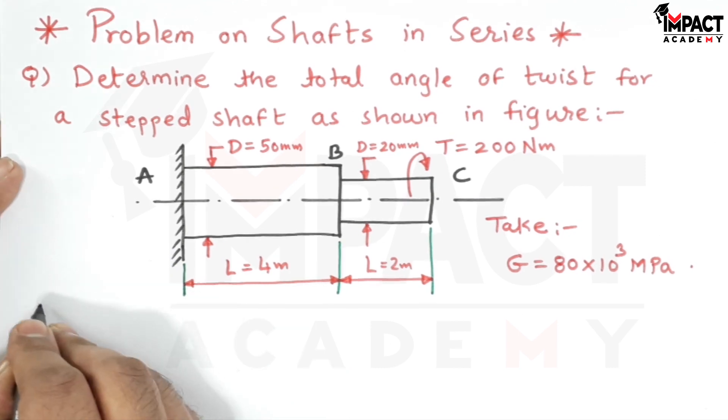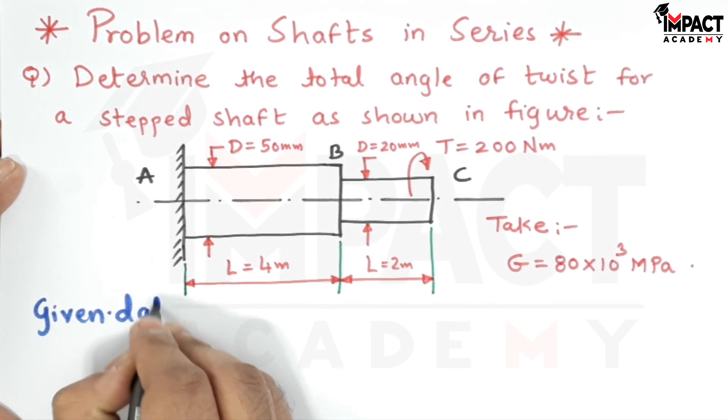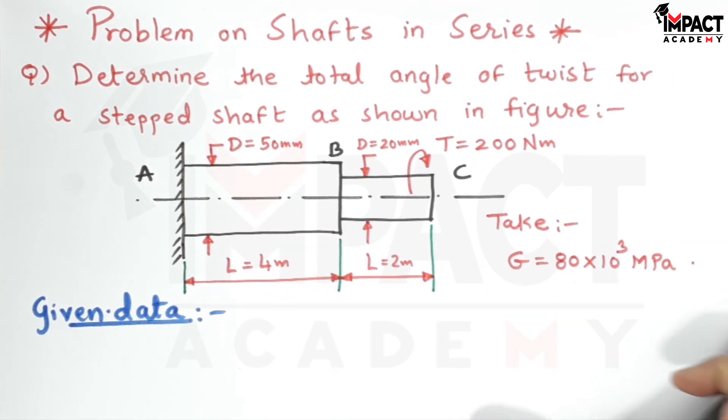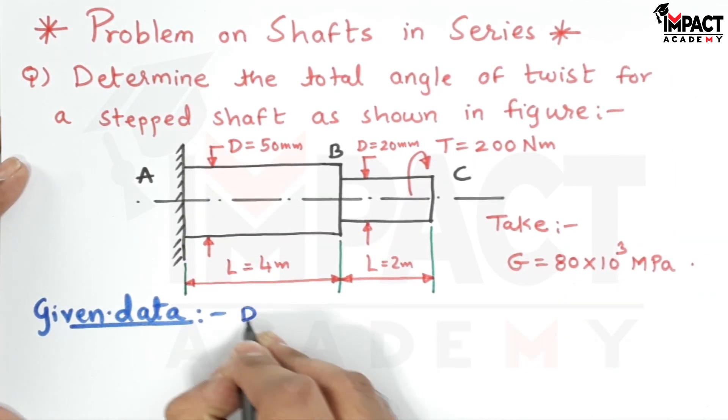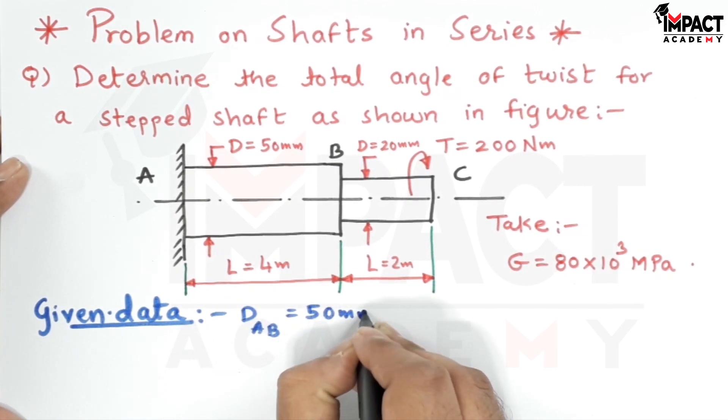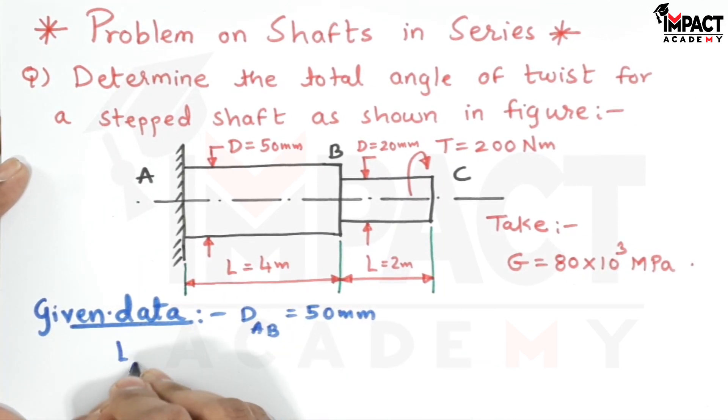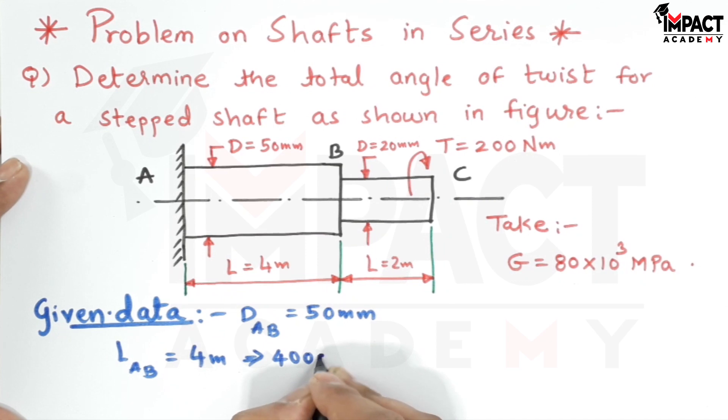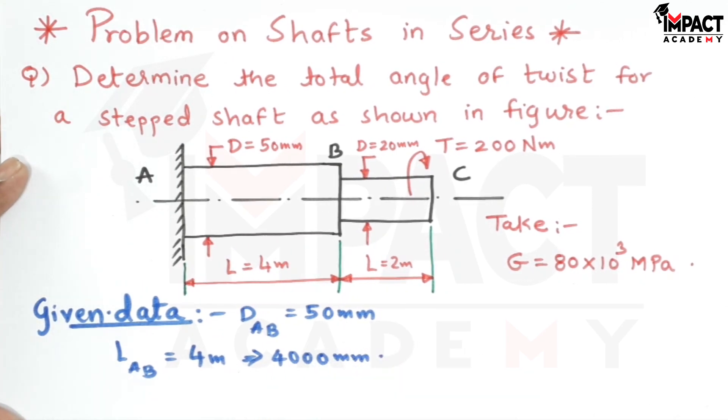I'll write the given data first. The diameter of portion AB is D_AB=50mm.